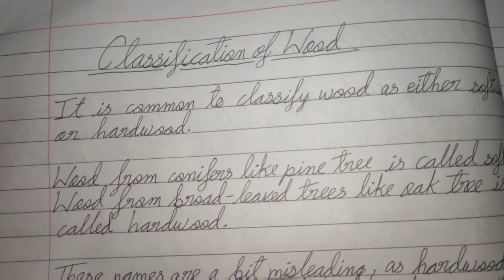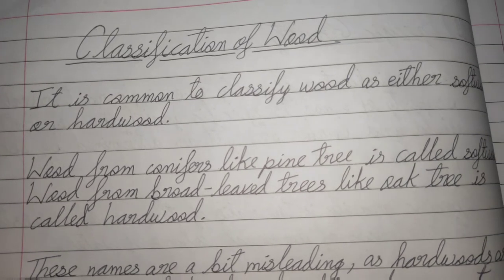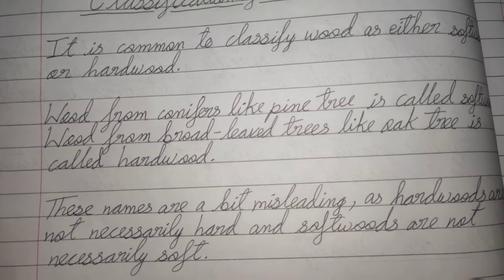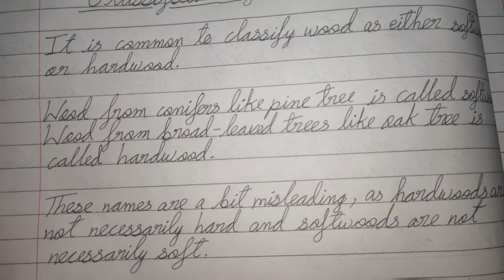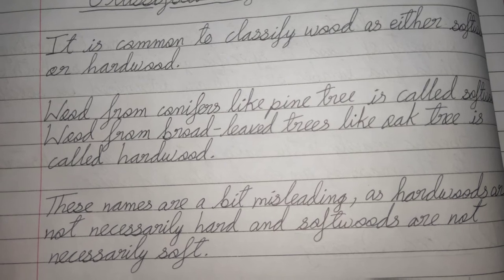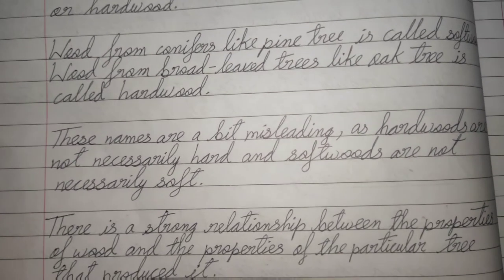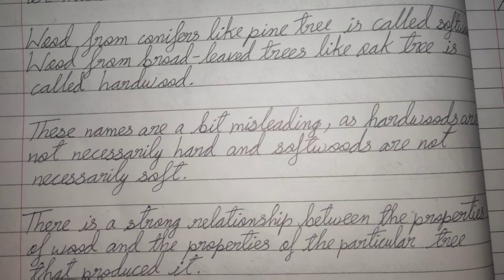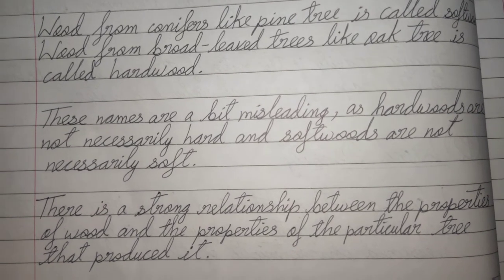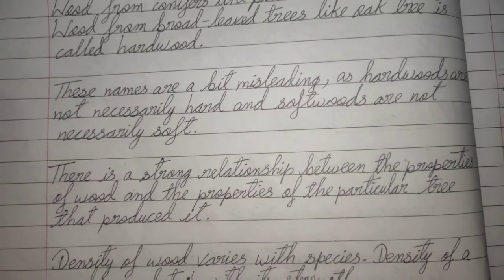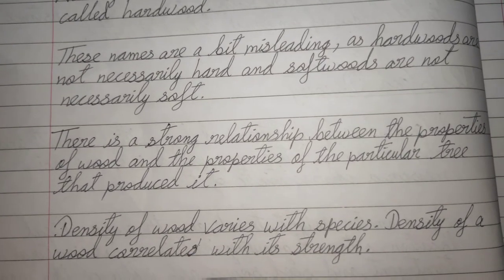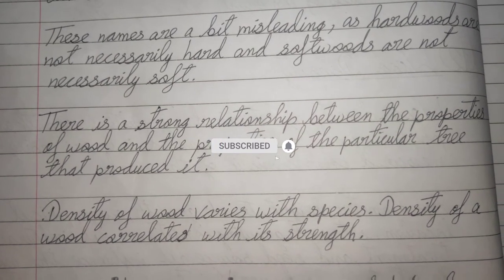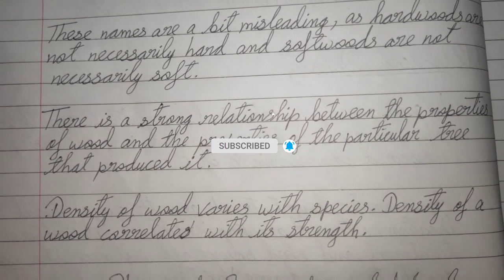It is common to classify wood as either softwood or hardwood. Wood from conifers like pine is called softwood, while wood from broad-leaved trees like oak is called hardwood. These names are a bit misleading, as hardwoods are not necessarily hard and softwoods are not necessarily soft. There is a strong relationship between the properties of wood and the properties of the particular tree that produced it. Density of wood varies with species and correlates with its strength.